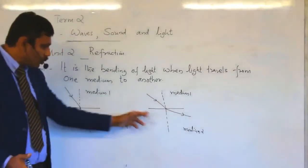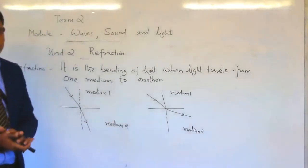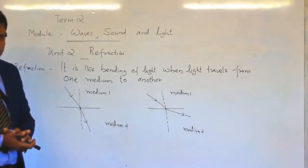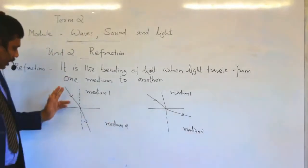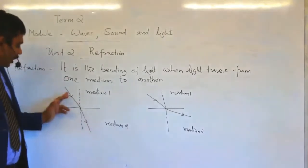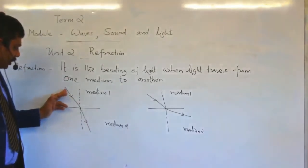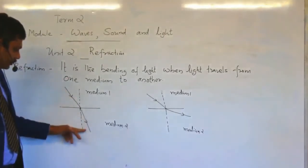These two diagrams represent the refraction of light. Here the light waves are traveling from one medium to another, and the light is traveling from one medium to another.